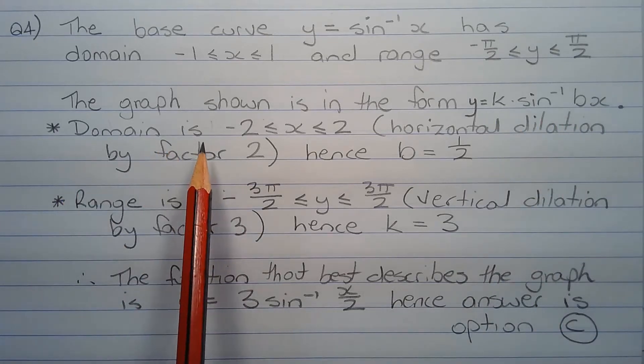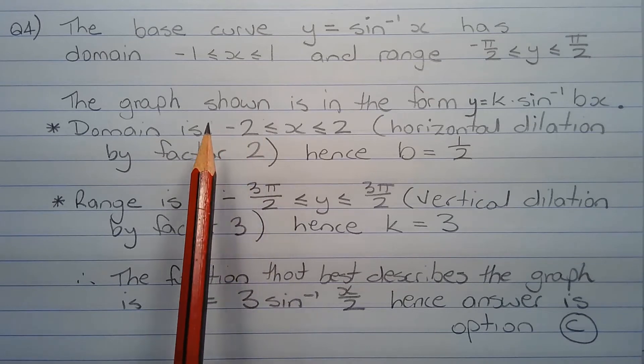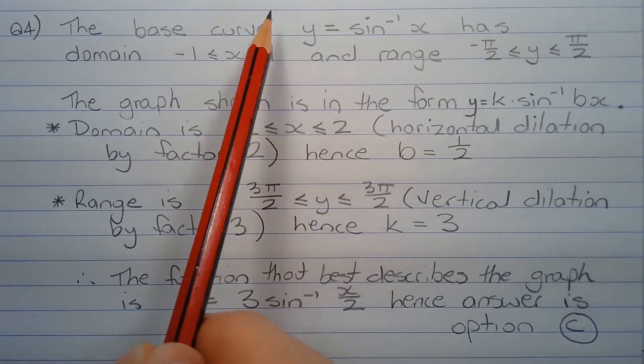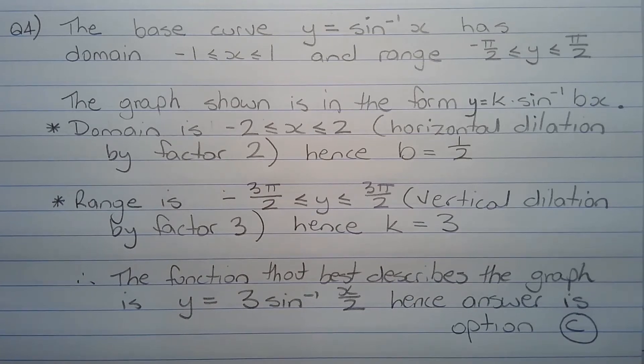The domain of the graph is negative 2 less than or equal to x less than or equal to 2, which is double the domain of the base curve. This is a horizontal dilation by factor 2, hence the value of b is equal to half.